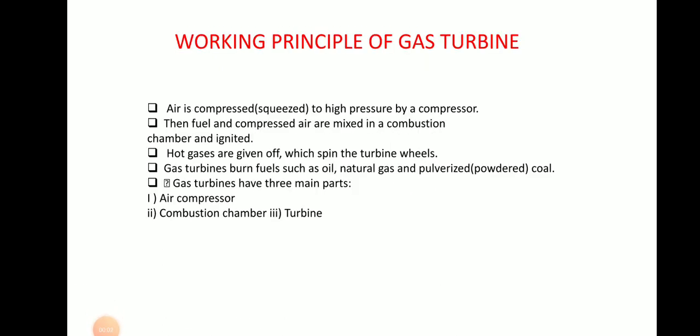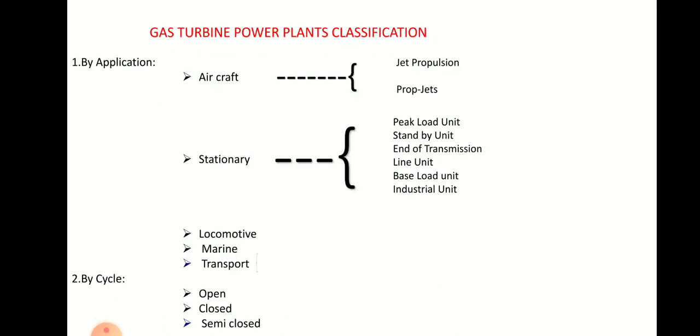Today we will discuss the gas turbine power plant classification. For aircraft, it is divided into jet propulsion and prop jets. In stationary applications, it is used as peak load unit, transmission line unit, base load unit, and industrial unit.